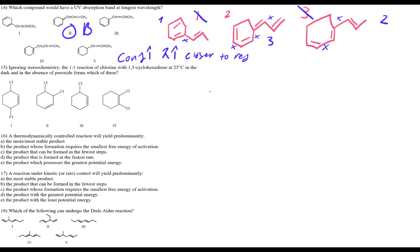Question 15: ignoring stereochemistry, the one-to-one reaction of chlorine with 1,3-cyclohexadiene at 25°C in the dark gives which product? First, draw 1,3-cyclohexadiene — a cyclohexane ring with double bonds starting at C1 and C3. The reaction is with Cl₂ at room temperature.